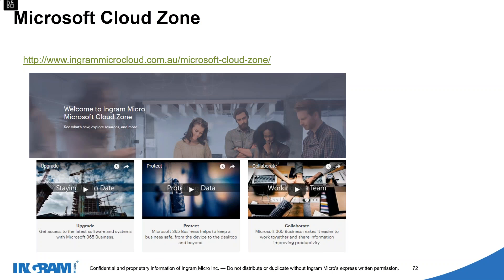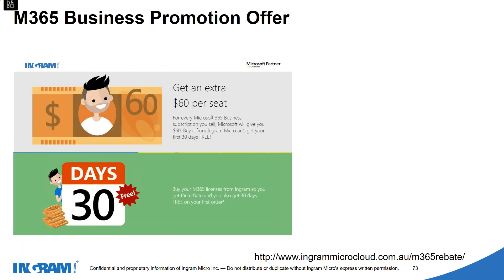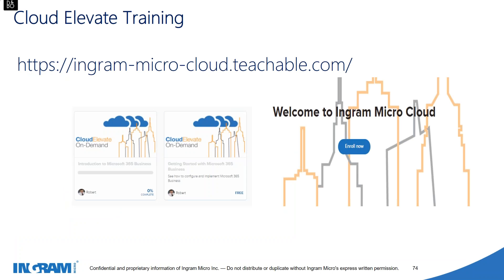We also have a Business Pro offer at the moment for Microsoft 365 Business — get an extra $60 per seat. For every Microsoft 365 Business subscription, you'll receive a $60 cash incentive when you buy from Ingram Micro, and get your first 30 days for free. It's a compelling offer, especially now at the end of financial year — a great opportunity to bring on your first customer. We also have online self-paced learning materials, including the Cloud Elevate On Demand series — free modules to help you get across the detail and get more control around the product.